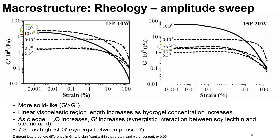Finally, to foreshadow something that will come up later in the presentation, I want to draw your attention to the 5-5. It has the lowest G prime — the equal ratios of each phase — and it was the weakest regardless of protein level and regardless of water content. I'll explain why that is when I get to the microscopy results.